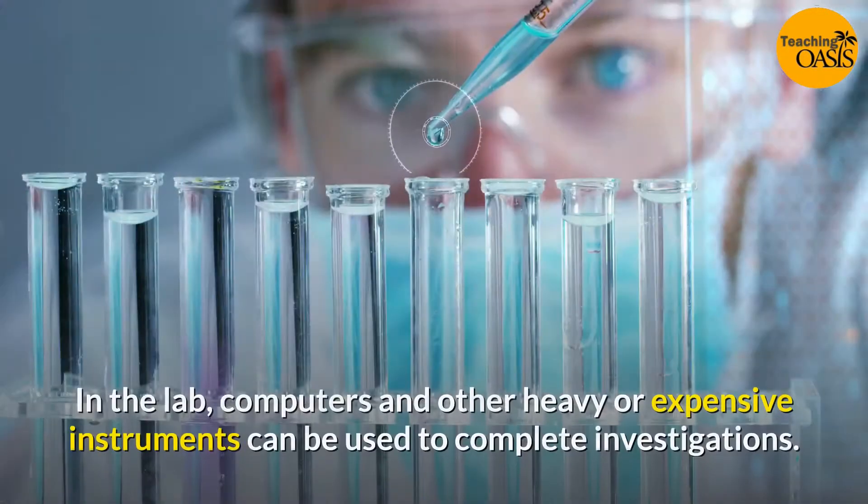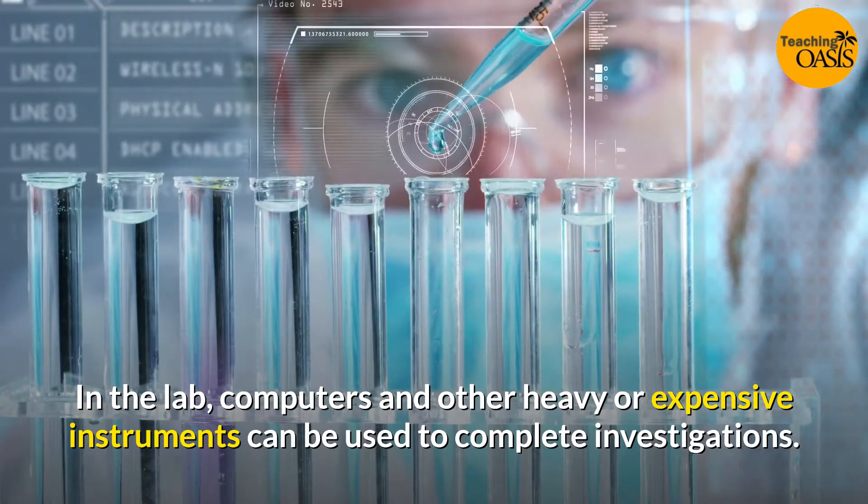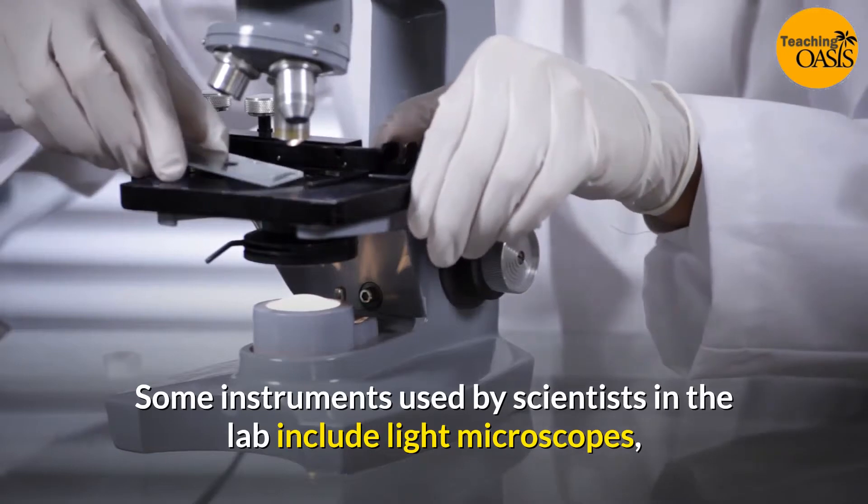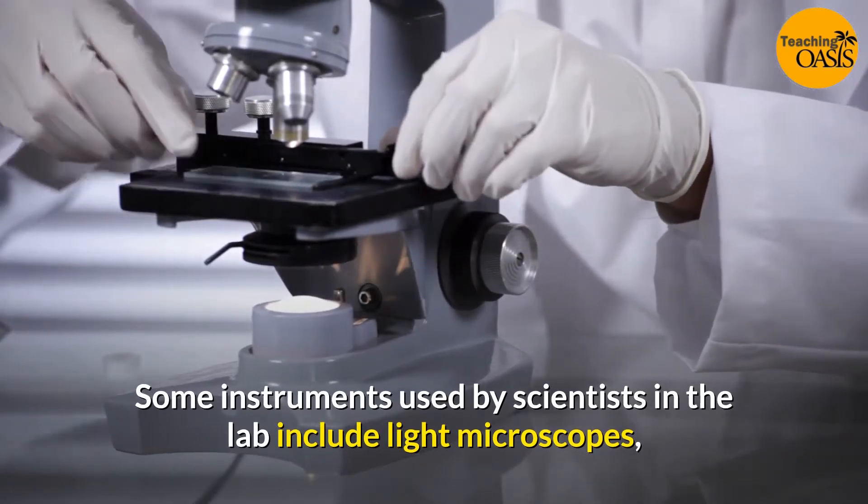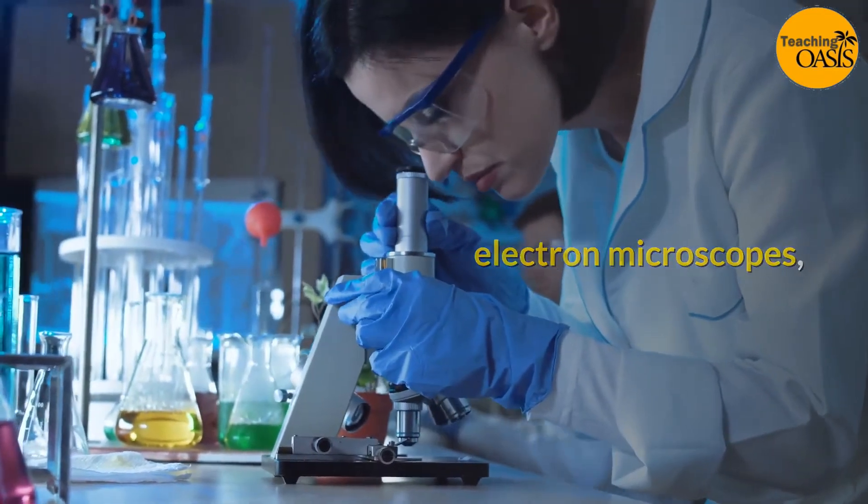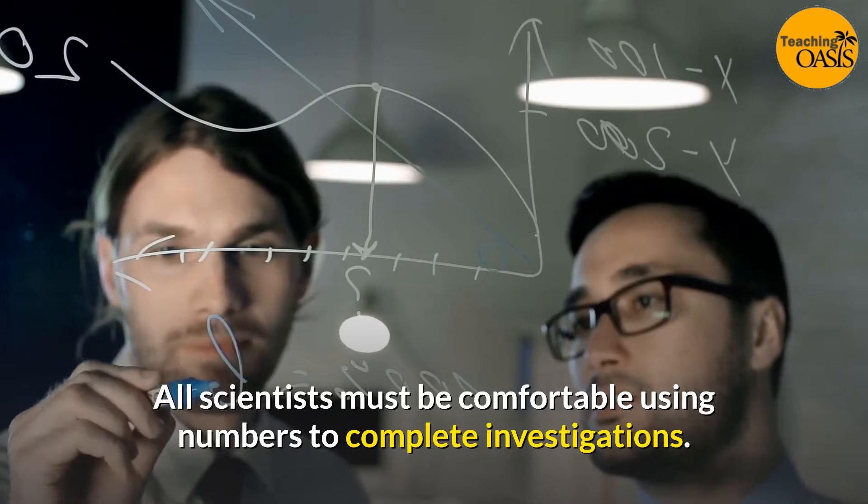In the lab, computers and other heavy or expensive instruments can be used to complete investigations. Some instruments used by scientists in the lab include light microscopes, droppers, electron microscopes, and pipettes. All scientists must be comfortable using numbers to complete investigations.